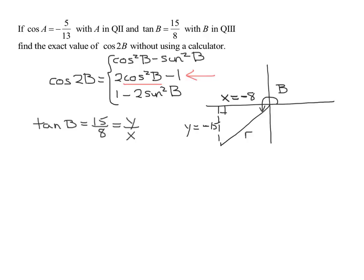And now we know x and we know y. We're going to find r by using the Pythagorean theorem. So x squared plus y squared equals r squared. Negative 8 squared plus negative 15 squared equals r squared. So 64 plus 225 is r squared. 64 and 225 is 289. And remember, r is always positive. So it's the positive square root of 289, which is 17.